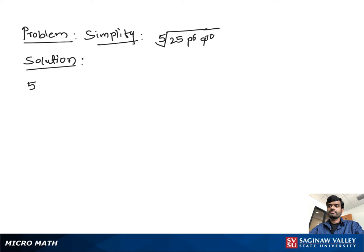Simplify the 5th root of 25 times p to the 6 times q to the 10. We write the 5th root of 25 because we cannot simplify 25 under a 5th root, so we leave it as it is.